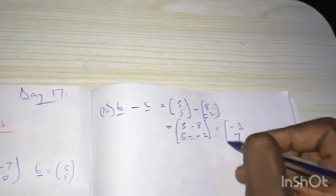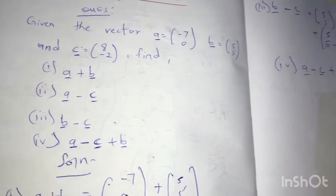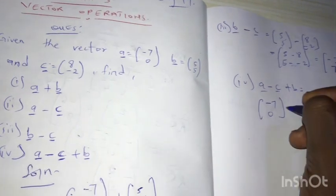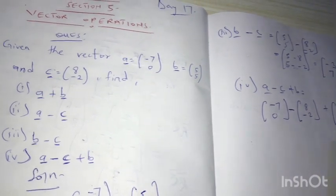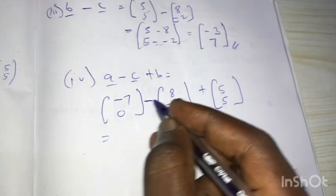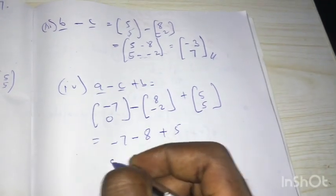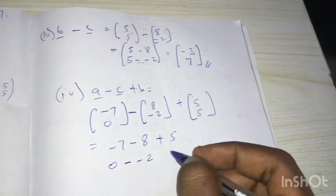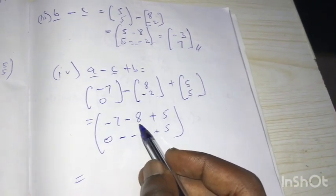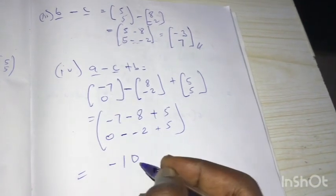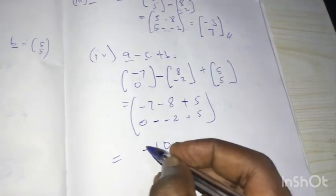Fourth one: a minus c plus b. A is (-7, 0), minus c which is (8, -2), plus b which is (5, 5). Top minus top plus top: negative seven minus eight plus five. Down minus down plus down: zero minus negative two plus five. Negative seven minus eight is negative fifteen, plus five gives negative ten. Zero plus two is two, plus five is seven. So the answer is (-10, 7).